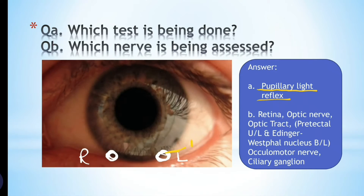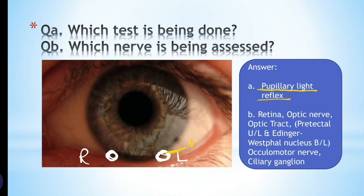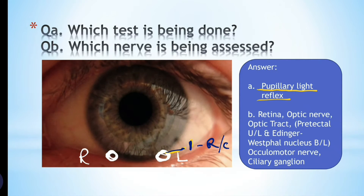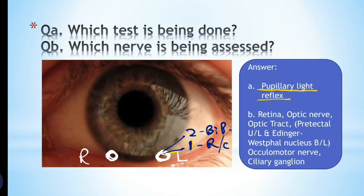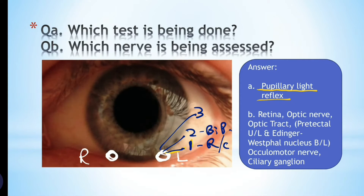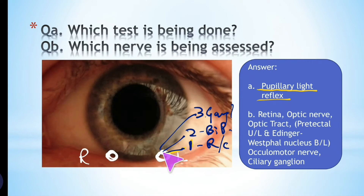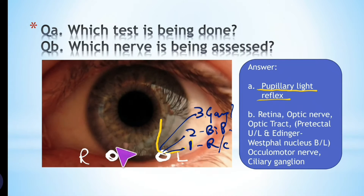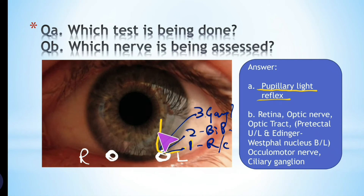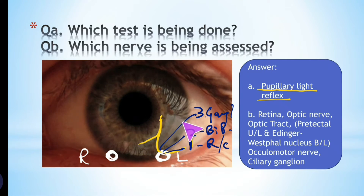The first neuron will be the rods or cones. The second neurons will be the bipolar cells, and the third neurons will be the ganglion cells of the retina. These ganglion cells come out as the optic nerve, and the optic nerve continues — the nasal fibers from the opposite retina join here through the optic chiasm, ultimately becoming the optic tract.